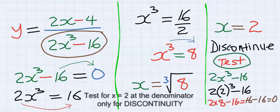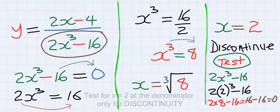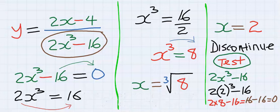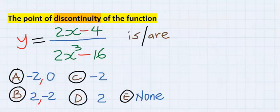If you test x equal to 2 in the function, you are going to get 0 at the denominator. And this will cause the function to stop to exist. Hence, our answer is D.